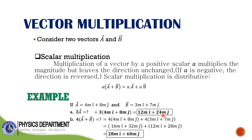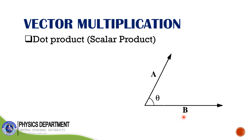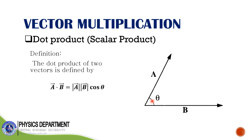Next is the dot product. Consider two vectors a and b with angle theta between them. The dot product is defined by the equation: vector a · vector b equals the magnitude of a times the magnitude of b times cosine theta, where theta is the angle between vector a and vector b.